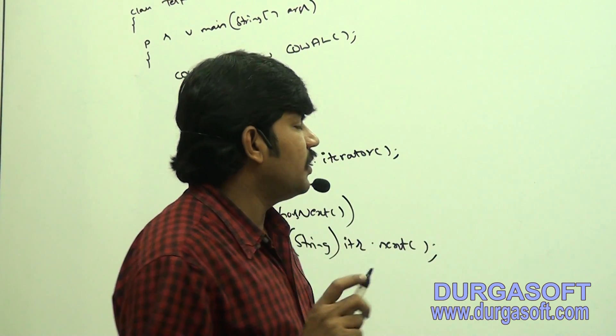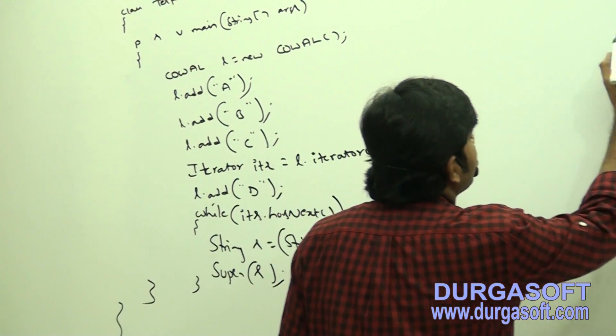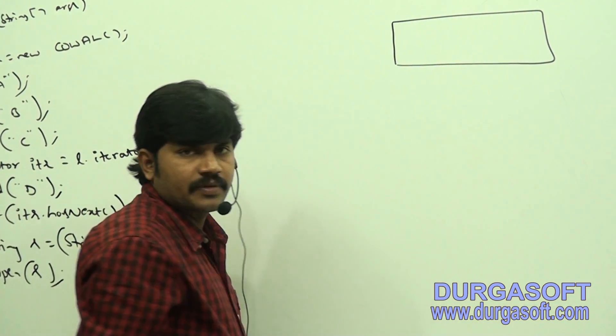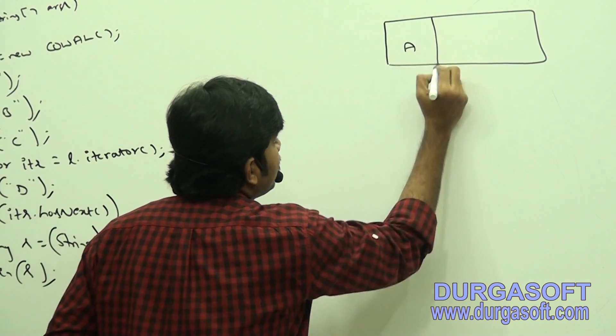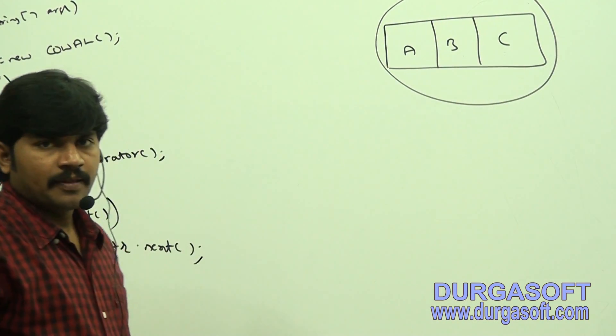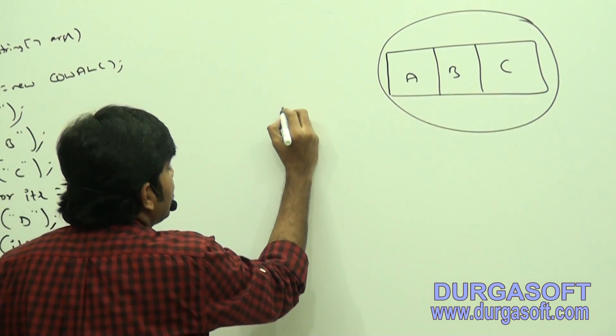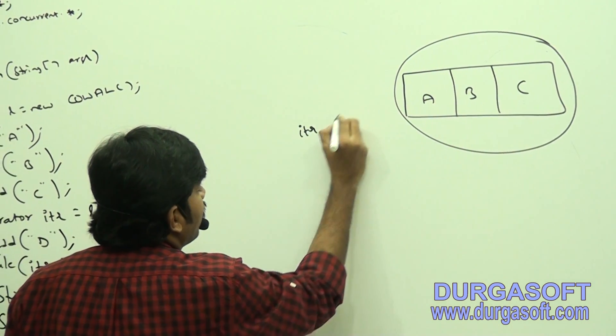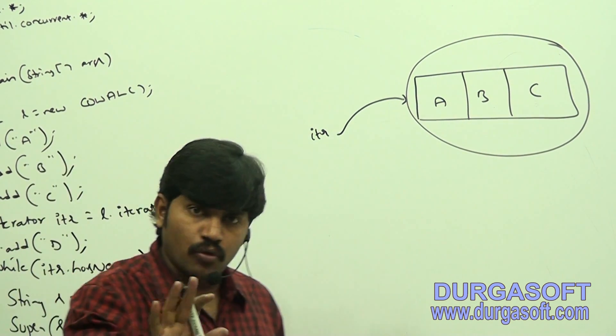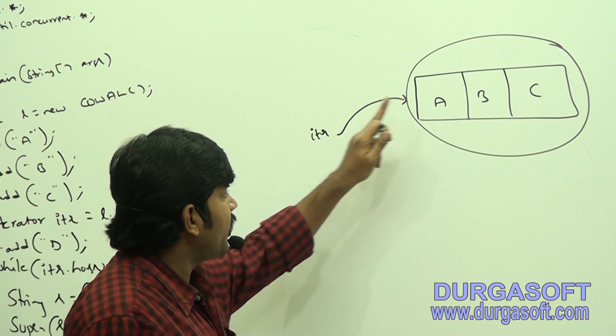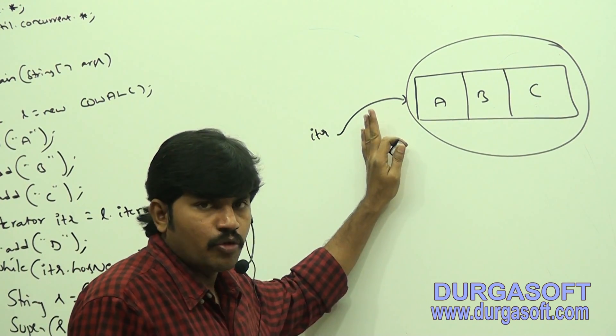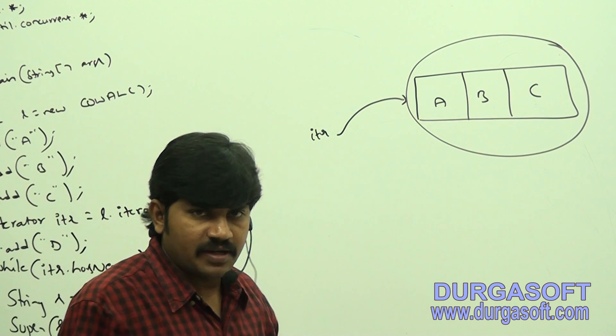Suppose you assume that I have one ArrayList, a CopyOnWriteArrayList is there. I added A, B, C. I added A, B, C. Now I open iterator for this ArrayList object. Of course, I will explain with code, not required to worry. I open iterator. After opening iterator, I open iterator for this CopyOnWriteArrayList.